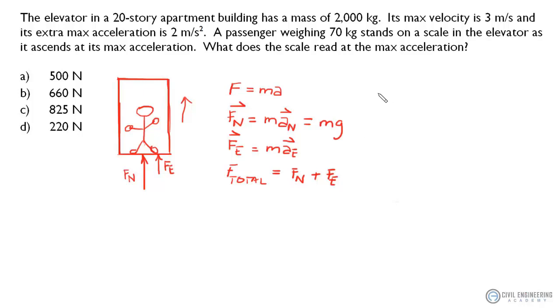Okay, so let's bang this out. F_N is going to equal 70 kilograms times acceleration of gravity which is 9.81 meters per second squared. And F_E is gonna equal mass of the passenger times acceleration of the elevator as it's ascending. And we punch those into our calculator and we're gonna get F_N equal to 686.7 Newtons.